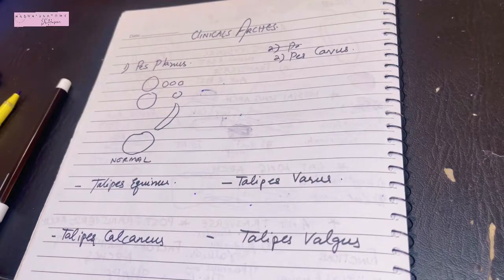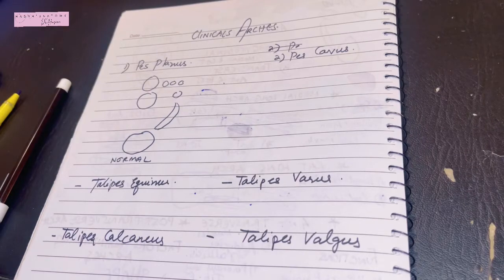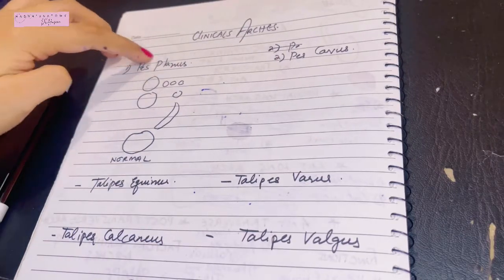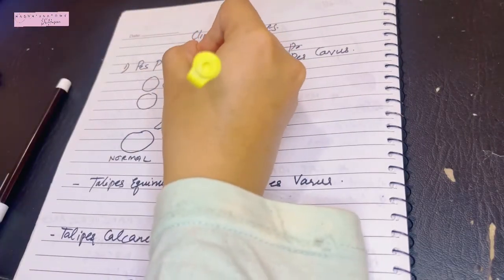So obviously the first clinical that will arise in the arches of the foot will be related to the fact that arches are gone. When the arches are gone, that term is known as pes planus.